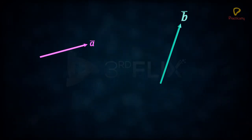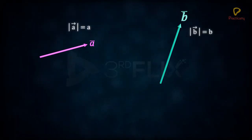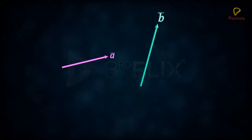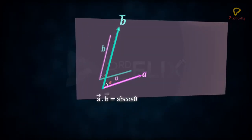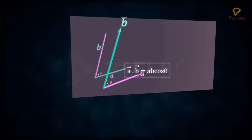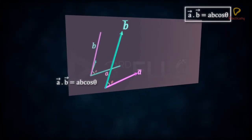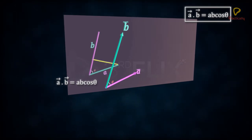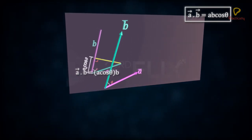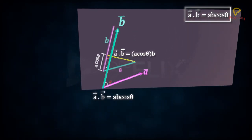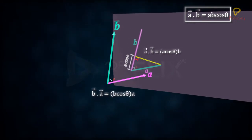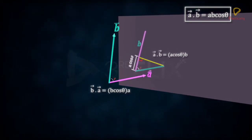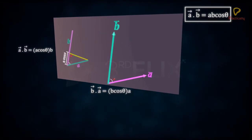Let us first look at the dot product of vectors A and B, with magnitudes A and B respectively. If the angle between them is theta, then A·B is simply AB cos theta. The component of A along B is A cos theta. So the dot product can be regarded as the product of the magnitude of one vector and the scalar component of the second vector along the direction of the first.